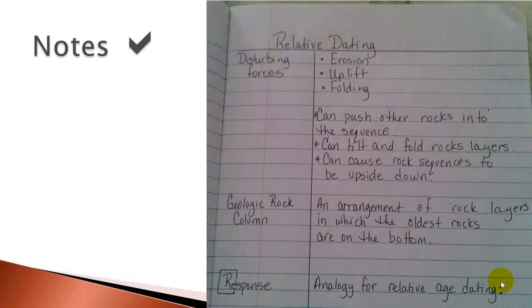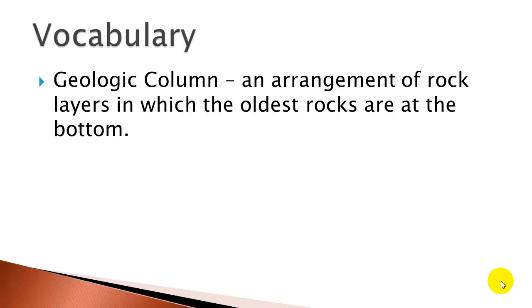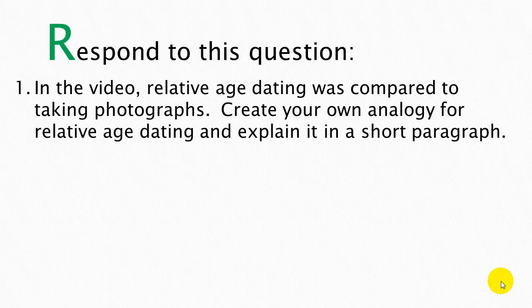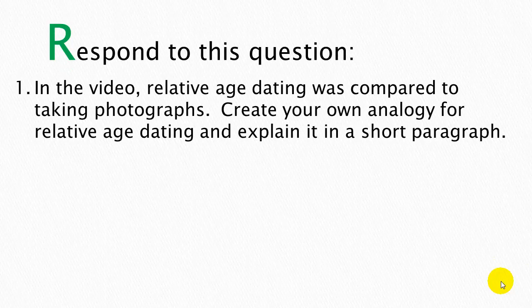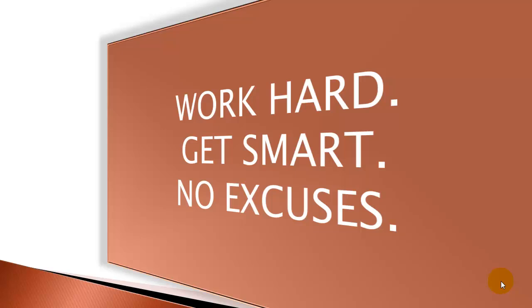Here's a quick note check — there are just three vocabulary words this time. Don't forget your three R's: go back and review your notes, do some kind of reflection on the left side of each page, and respond to this question: In the video, relative age dating was compared to taking photographs — create your own analogy for relative age dating and explain it in a short paragraph. And now you know about relative age dating. Thanks for watching.